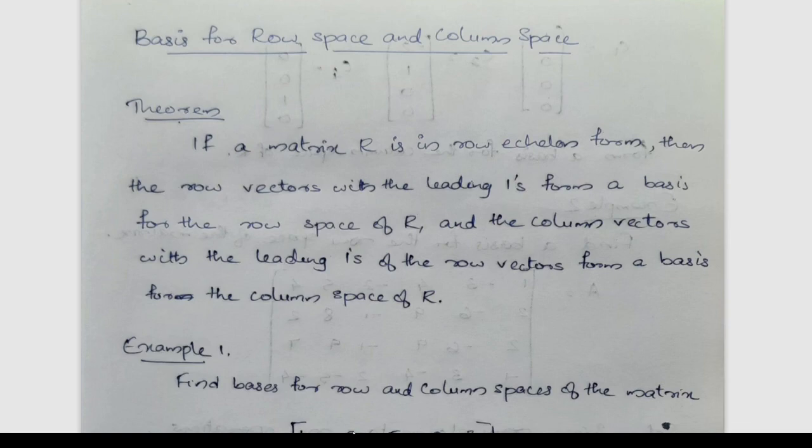The matrix R is equal to the row echelon formula. The formula is in row echelon form. Leading ones are the first non-zero entry in each row, and all row vectors with leading ones form the row space. Column vectors with the leading ones form the column space.